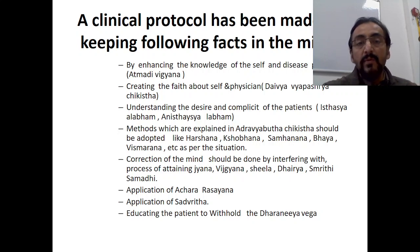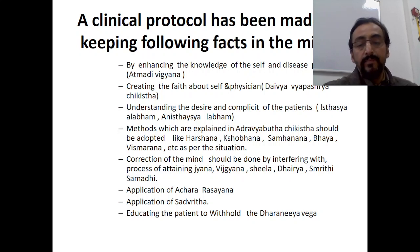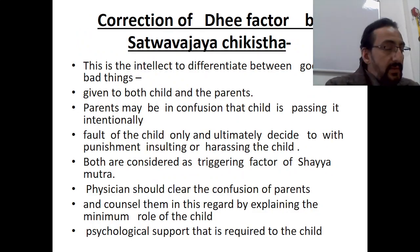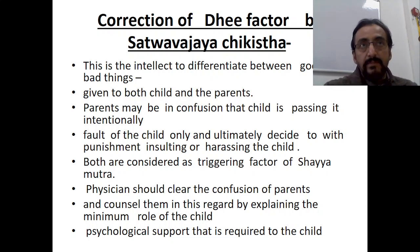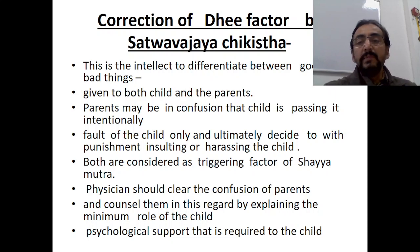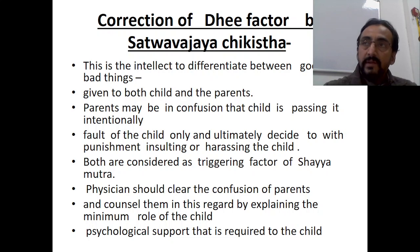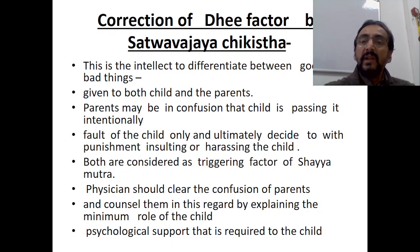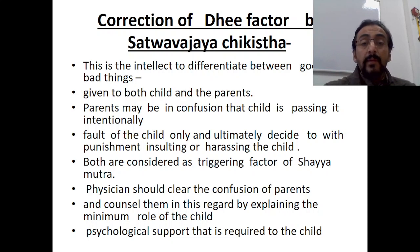These are the different facets included when adopting Sattva Vajaya Chikisa in a child with Shaiya Mutra. First, correction of the Dhi factor: Dhi refers to the intellect to differentiate between good and bad. Dhi is affected in a child with nocturnal enuresis. This has to be done for both child and parents, because parents may be confused, thinking the child is passing urine intentionally — ultimately deciding to punish and insult the child.